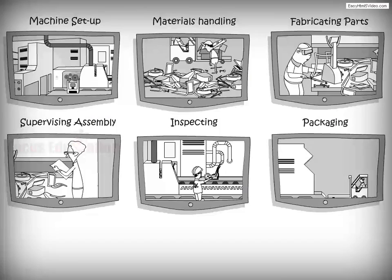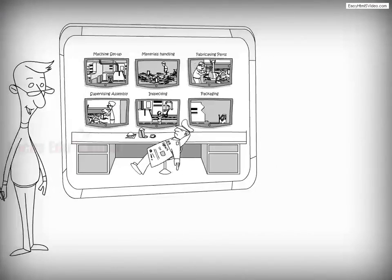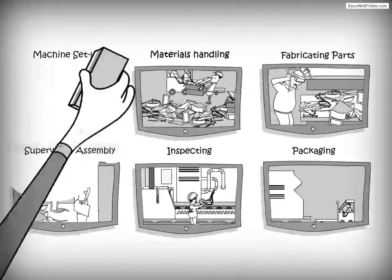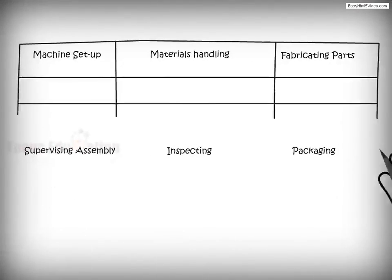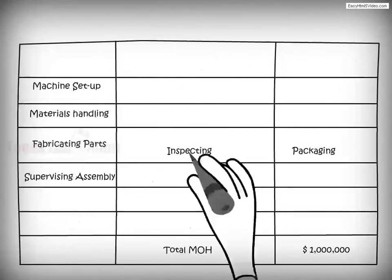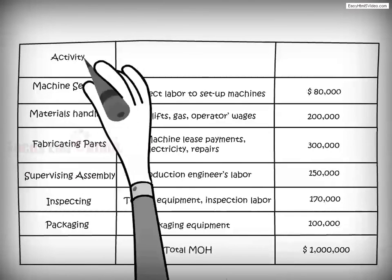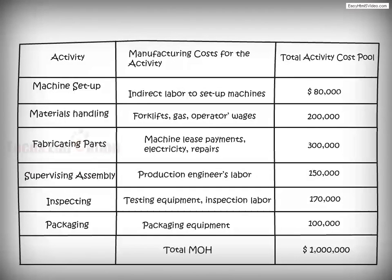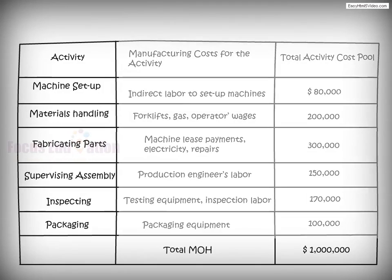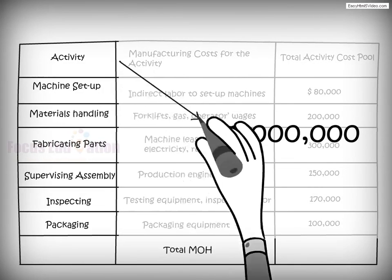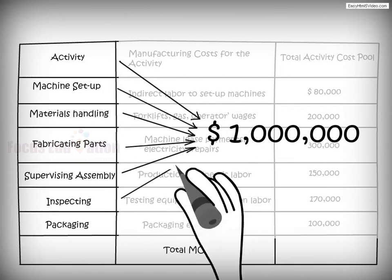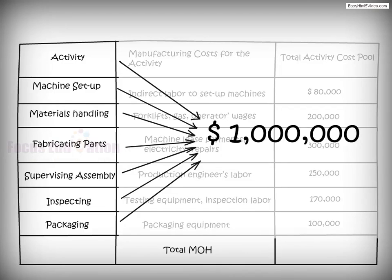With the activities established, the total manufacturing overhead costs of each activity — known as activity cost pools — must be estimated. All the costs in activity cost pools are manufacturing overhead costs (MOH), or indirect costs; they don't include direct labor and direct material costs. With the total MOH calculated, the company must determine how much of the total estimated $1 million relates to each activity.